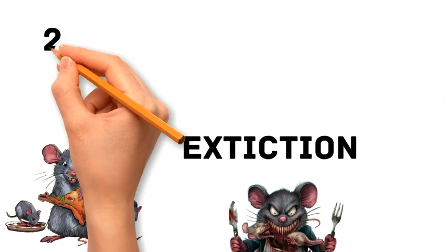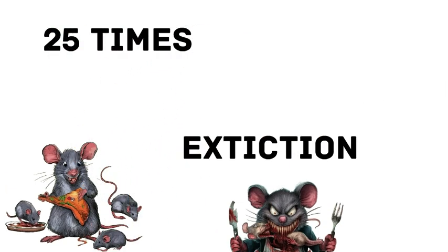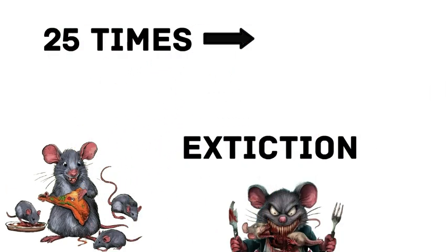John Calhoun repeated this experiment 25 times, each with the same result: social collapse and extinction.